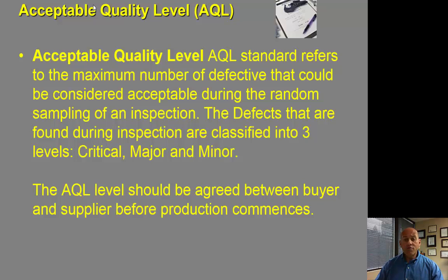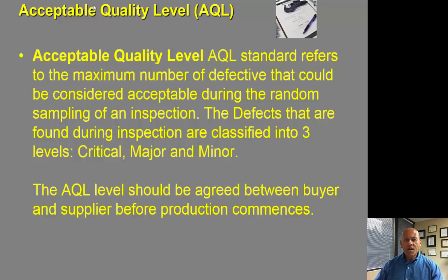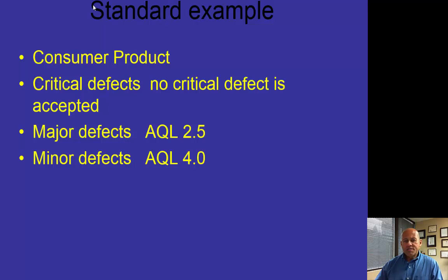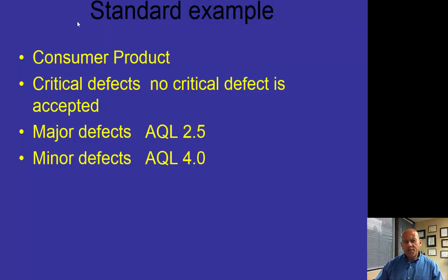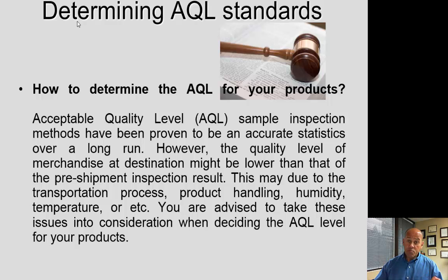The first one I want to go over is AQL, which stands for Acceptable Quality Level. This standard is used by a lot of large importers and large retailers that are buying all kinds of different products across a big spectrum of product categories. There are different types of AQLs—you might hear AQL 2.5 or 4.0—meaning there are different AQL standards for different types of products.